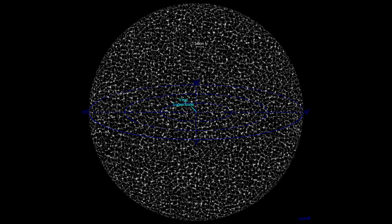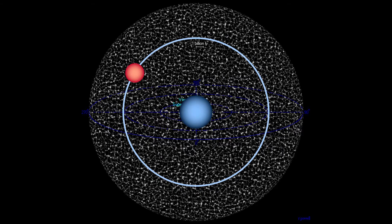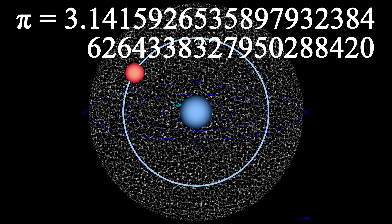If you wanted to calculate the circumference of the known universe and you wanted to be precise down to the width of a hydrogen atom, how many digits of pi would you need to use? A hundred? A thousand? It might surprise you to learn that you only need 39 digits of pi. And I'll grant you, 39 digits is still quite a bit — can we encode a number of this magnitude in binary?